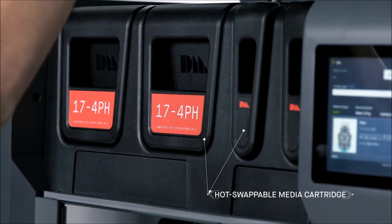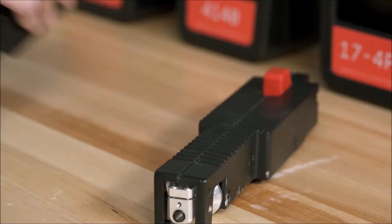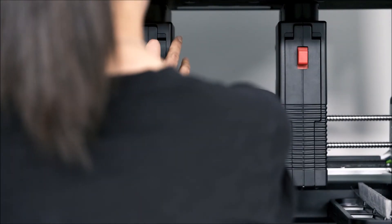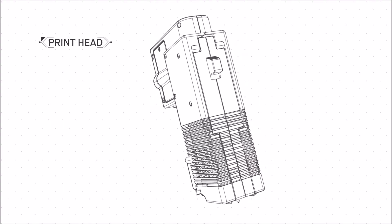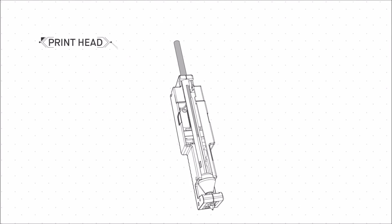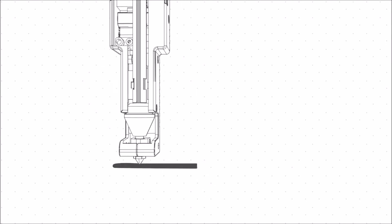Safe-to-handle, hot-swappable media cartridges and quick-release printheads allow for easy material changes in a matter of minutes instead of hours or even days with other systems. In a process called bound metal deposition, metal rods—metal powder held together by wax and polymer binder—are heated and extruded onto the build plate.